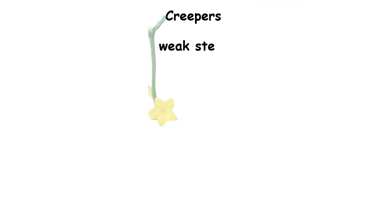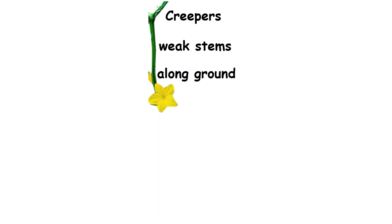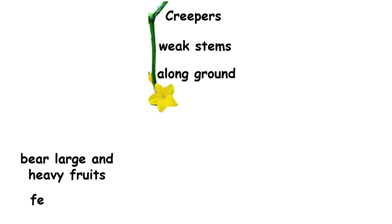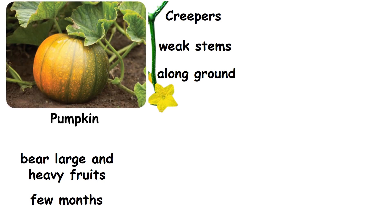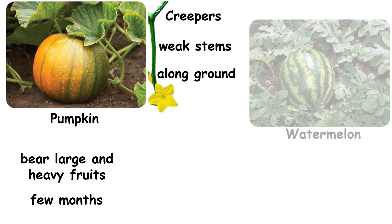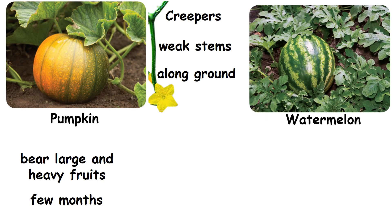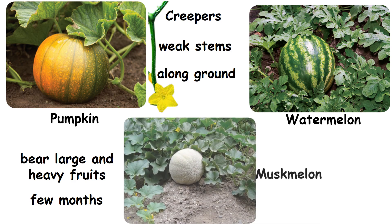Creepers. Creepers are plants that have weak stems. They grow along the ground and bear large and heavy fruits. Many of them live only for a few months. Examples: pumpkin, watermelon and muskmelon.